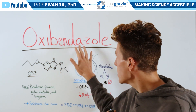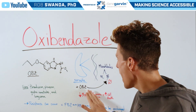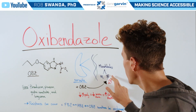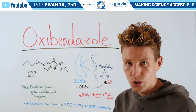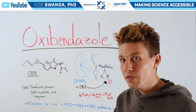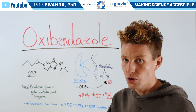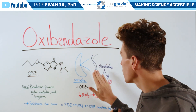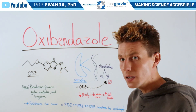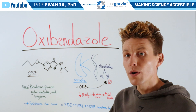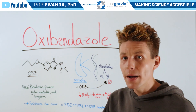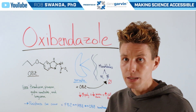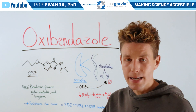However, when oxybendazole is added, it's going to specifically target a part of beta tubulin and attach to it. This prevents it from interacting with alpha tubulin, so therefore we don't see as many microtubules being formed, and therefore the parasite has a compromised structural integrity.